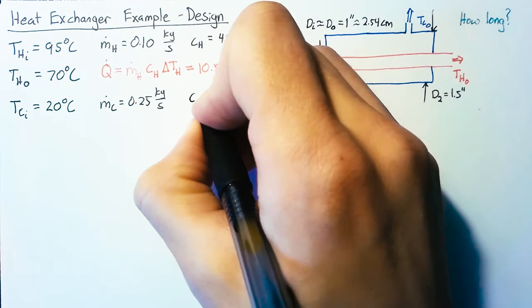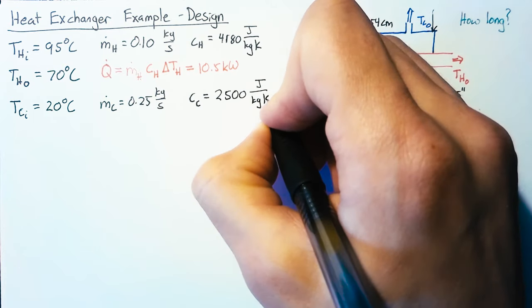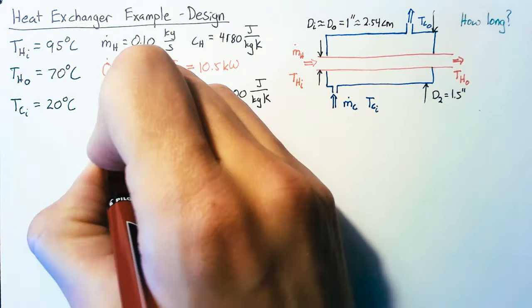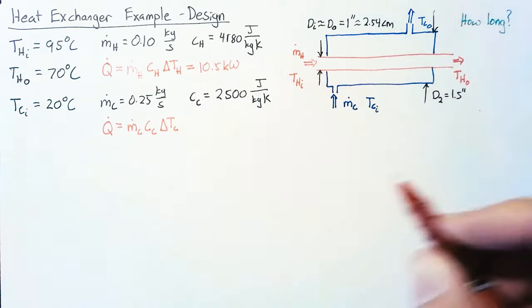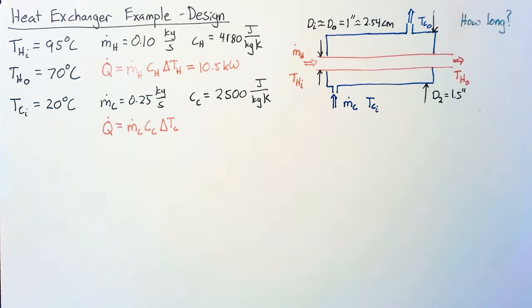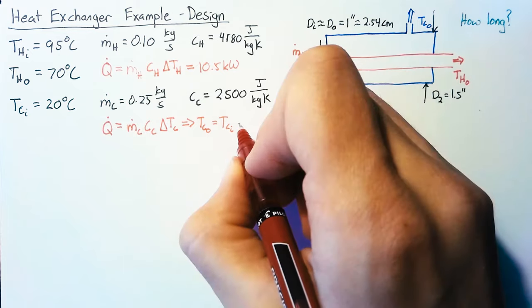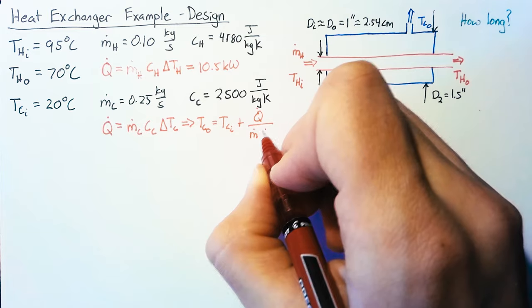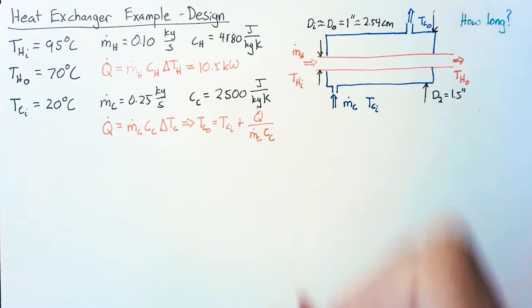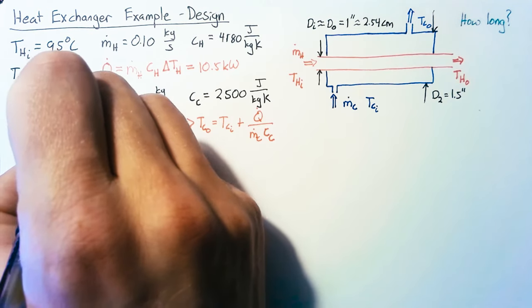Our coolant also has a specific heat, which we'll set to 2500 joules per kilogram Kelvin. With that value we can write that same equation for the cold side. We're going to assume there's no heat loss through our outer pipe wall, so the pipe is well insulated. We can rearrange to find T_c_out = T_c_in + Q_dot/(m_dot_c * c_c). Plugging in our values, we end up with T_c_out of 36.7 degrees Celsius.